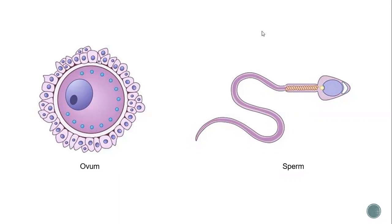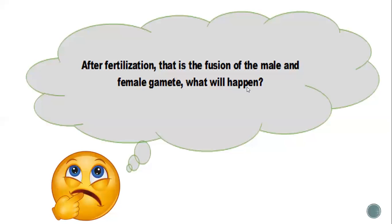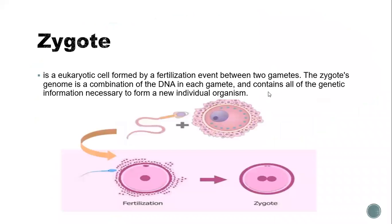What will happen if the two reproductive cells unite? After fertilization — that is, the fusion of the male and female gamete — zygote formation occurs. A zygote is a eukaryotic cell formed by a fertilization event between two gametes. The zygote genome is a combination of the DNA in each gamete and contains all of the genetic information necessary to form a new individual organism.